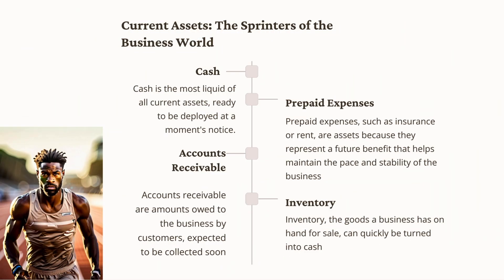Picture current assets as the sprinters on a track team — quick, agile, and ready to get moving at a moment's notice. These assets include cash, which is the most liquid because it doesn't need to be converted; it's already ready to go. Prepaid assets are costs paid in advance for services or goods to be received later, like prepaid insurance or rent. Accounts receivable are amounts customers owe to the business, which are expected to come in soon, converted into cash upon collection. There is also inventory — the goods the business has on hand for sale — which can quickly be turned into cash.